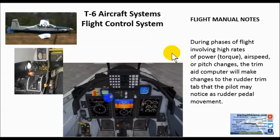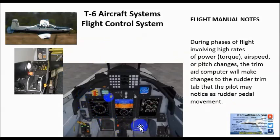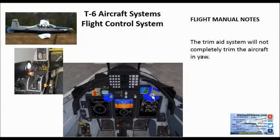Some flight manual notes: during phases of flight involving high rates of power, torque, airspeed, or pitch changes, the trim aid computer will make changes to the rudder trim tab that the pilot may notice as rudder pedal movement. As you are operating the aircraft in flight, the trim aid device may do some things with the rudder — those rudder pedals may move on their own. You'll notice it either by feeling it with your feet or by seeing the rudder controls move if you glance downward. The trim aid system will not completely trim the aircraft in yaw — don't expect it to do all the work for you. It's just assisting.